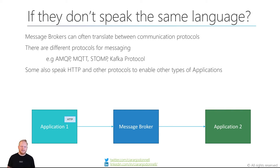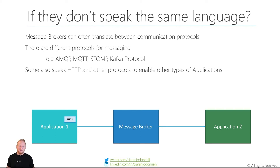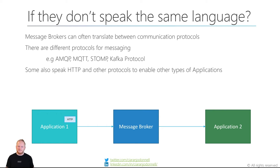The final challenge was what if they don't speak the same language? Message brokers often can translate between different communication protocols. Some intelligent ones can even translate the contents of the message, which we'll talk about further in the series. For the protocol at least, it's pretty common that message brokers can translate between multiple different protocols. There are protocols specifically for messaging — AMQP (the asynchronous message queue protocol) is a good one, as well as MQTT and STOMP, and some proprietary ones like the Kafka protocol. Some message brokers will even speak HTTP and other non-message-specific protocols. Here we see application one sending something in through HTTP, the message broker translates that and sends it down as AMQP to application two, which can respond in AMQP, and then the message broker translates that back to HTTP and passes the information back to application one.